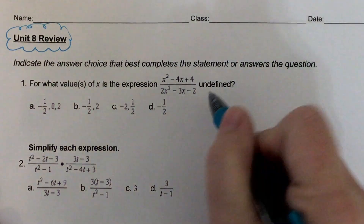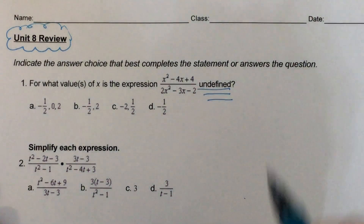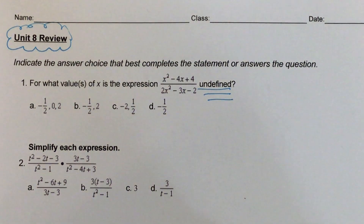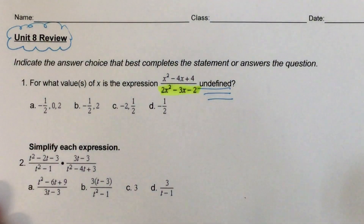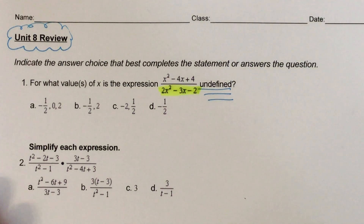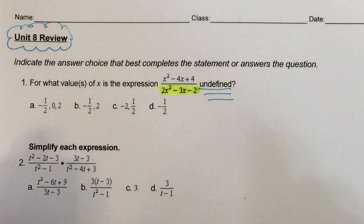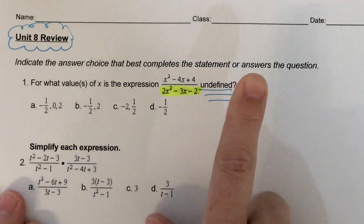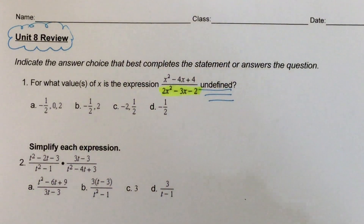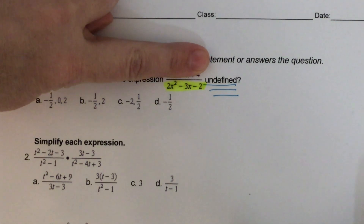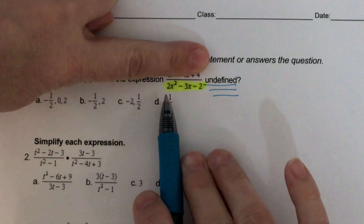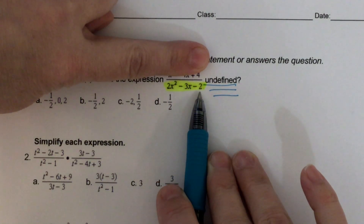Number one: for what values of x is the expression undefined? If you want to know when something is undefined, you want to make sure your denominator is factored and set it equal to zero. If it wanted vertical asymptotes or holes, we'd factor numerator and denominator, but if all it wants is where something's undefined, we only need to factor the denominator and set it equal to zero.